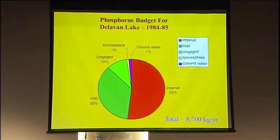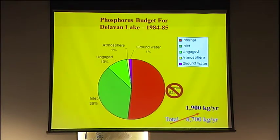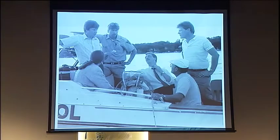So how were we going to get that done? We had to reduce the 8,700 kilograms down to 1,900 — that's a 75% reduction. The only way they felt they could do that was to get rid of the internal loading completely and then reduce the external loading by another 75%. Now this is massive, but that was the goal of this project.